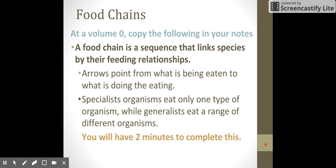Now, you take a producer, you add various levels of consumers to that, and you end up with a food chain, which is similar to what we did in the online lab where we had the plants, which was the grass, and our consumers, which were the rabbit, the snake, and then the hawk. So a food chain is a sequence that links species by their feeding relationships. Arrows point from what is being eaten to what is doing the eating. That's important to make sure that you draw your arrows that way. So the arrow would go from the grass to the rabbit, then the rabbit to the snake.